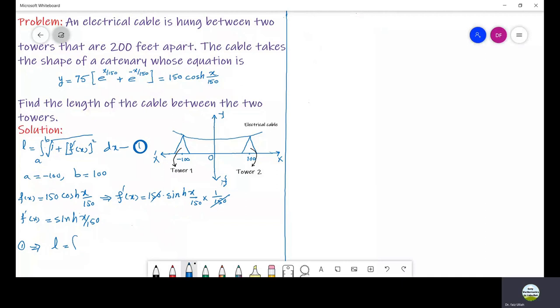Let us use these values in equation 1. So we have L equals integration from minus 100 to 100 of square root of 1 plus sinh squared (x/150) dx.